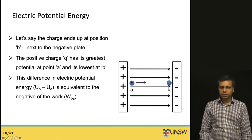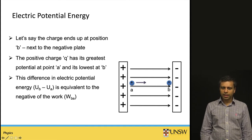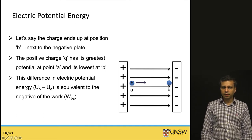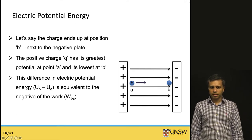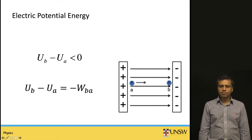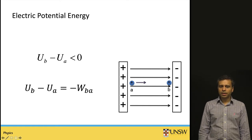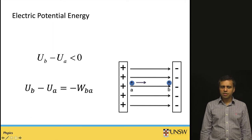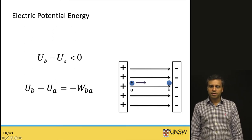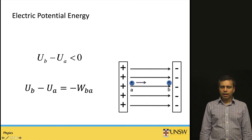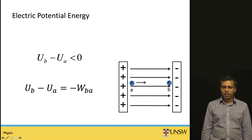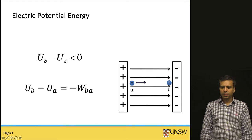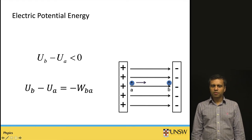If we take the object from point B back to point A, we restore its potential energy to U_A. When the positively charged object is close to the positive plate, its potential energy is larger at position A. When closer to the negative plate, its potential energy decreases. So U_B minus U_A is a negative quantity — it is less than zero — and equals the negative of the work done in moving the object from point B to A.